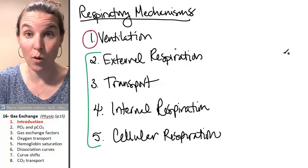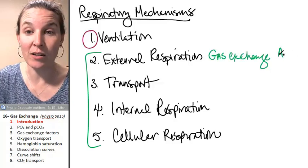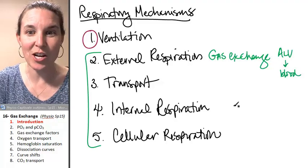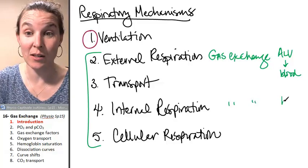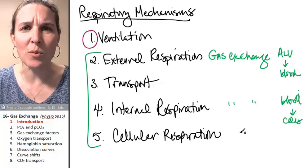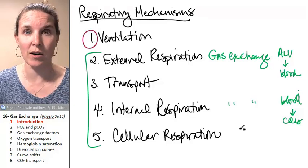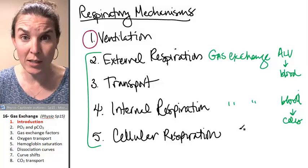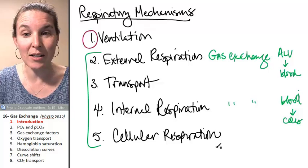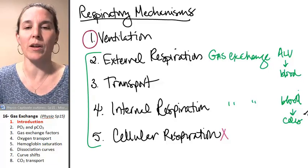External respiration — hopefully you remember this is gas exchange between alveoli to the blood — and internal respiration was gas exchange between the blood and the body's cells. And cellular respiration we know is happening in the mitochondria, which is the whole reason why gas exchange anywhere is necessary. We wouldn't even need a respiratory system if it wasn't for cellular respiration.